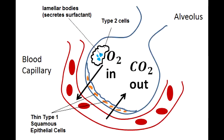One additional thing to note about type 2 pneumocytes is that they are precursors to type 1 cells. They can differentiate into type 1 cells or into other type 2 cells, and they are also the cells you would see proliferating when there is lung damage.